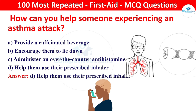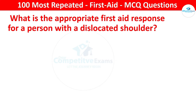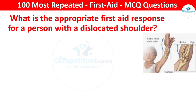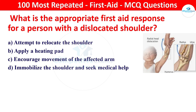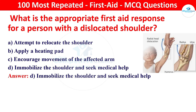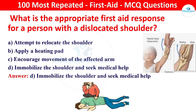Next question: what is the appropriate first aid response for a person with a dislocated shoulder? Options: attempt to relocate the shoulder, apply a heating pad, encourage movement of the affected arm, or immobilize the shoulder and seek medical help. The right answer is immobilize the shoulder and seek medical help. Immobilizing the shoulder helps to prevent further injury, and professional assistance is necessary for proper evaluation and treatment.